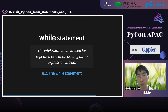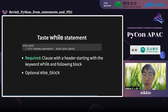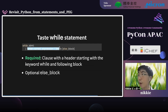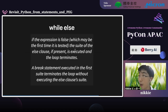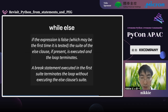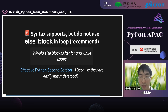The while statement is used for repeated execution as long as an expression is true. The syntax of the while statement is defined by just two lines — a clause with a header starting with the 'while' keyword and the following block is required, and the else block is optional. About while-else: if the expression is false, the suite of the else clause is executed and the loop terminates. When a break statement is executed, the else clause is not executed. This kind of syntax is defined in Python — but I recommend not using it just because you know about it. 'Effective Python' says to avoid else blocks after for and while loops because they are easily misunderstood.